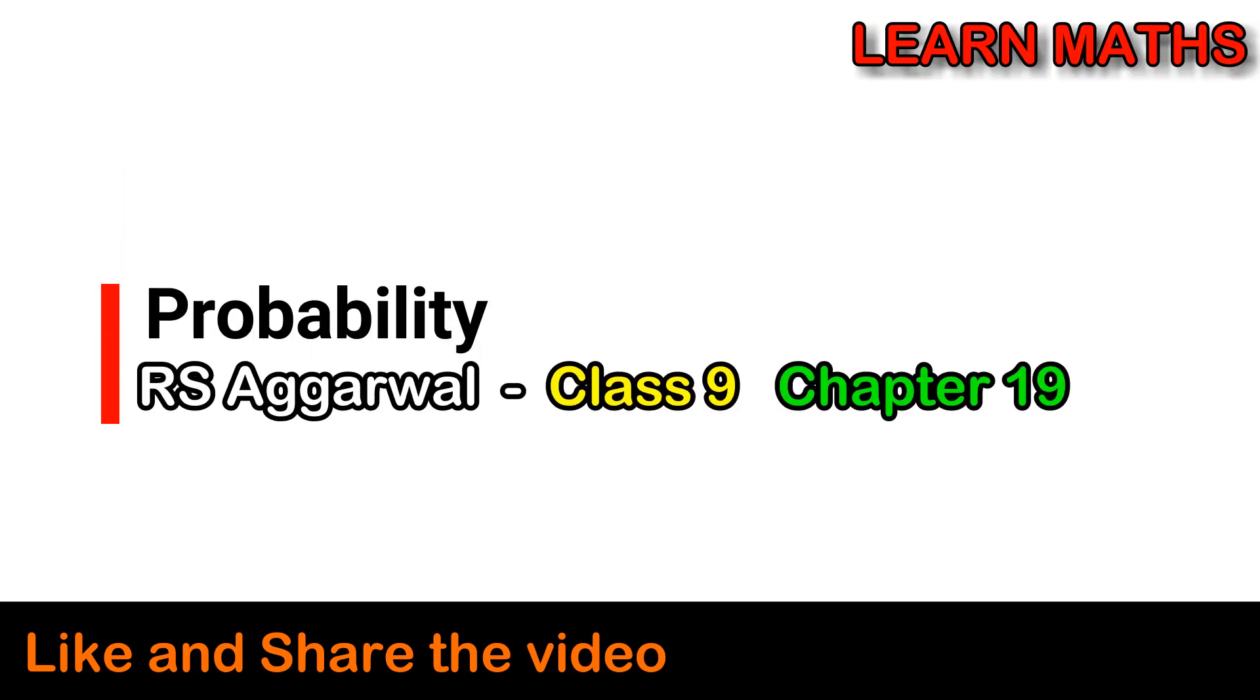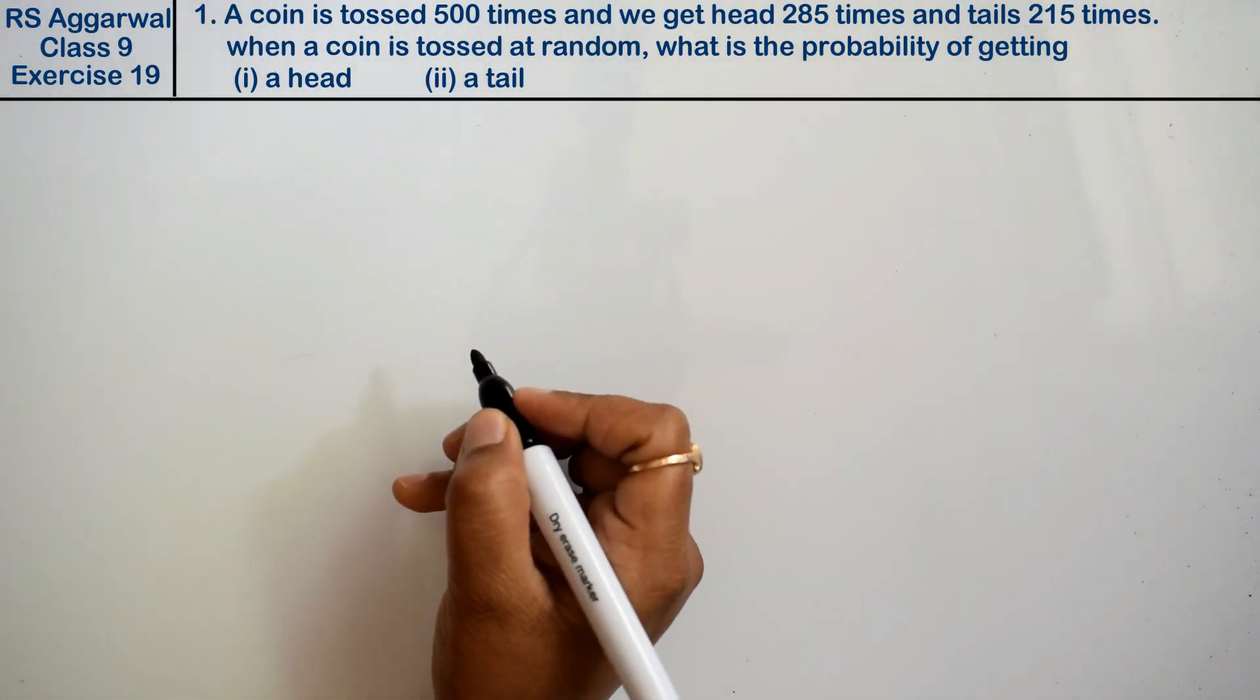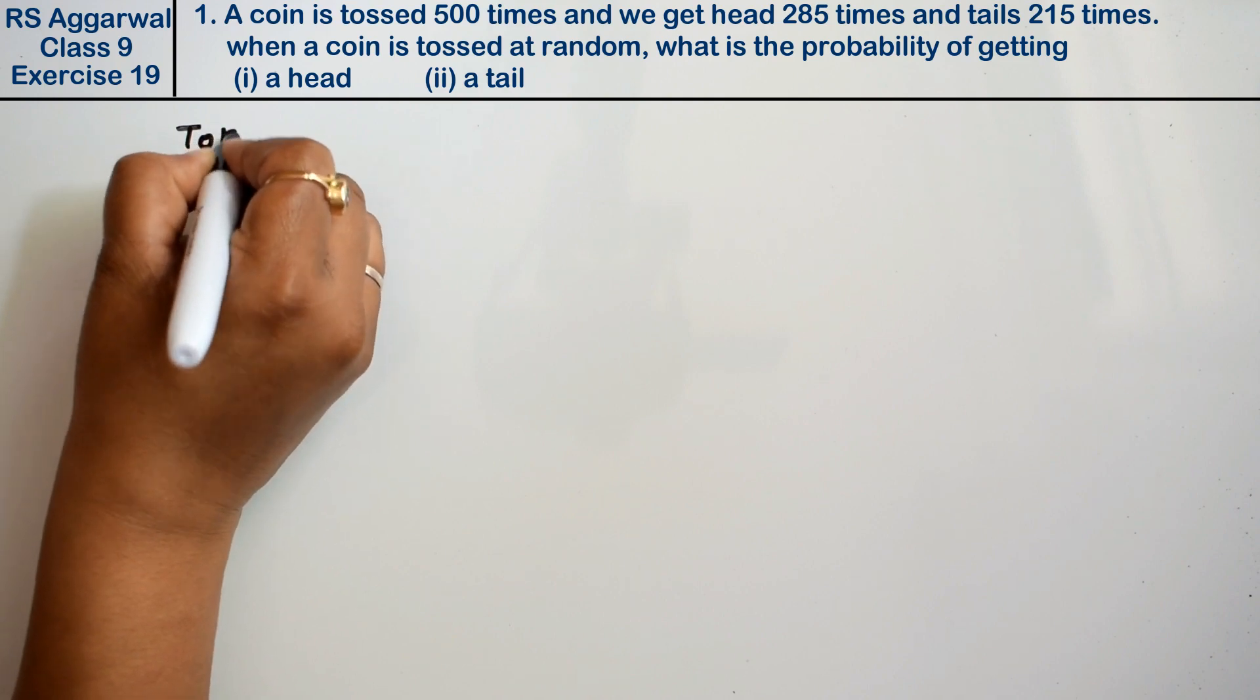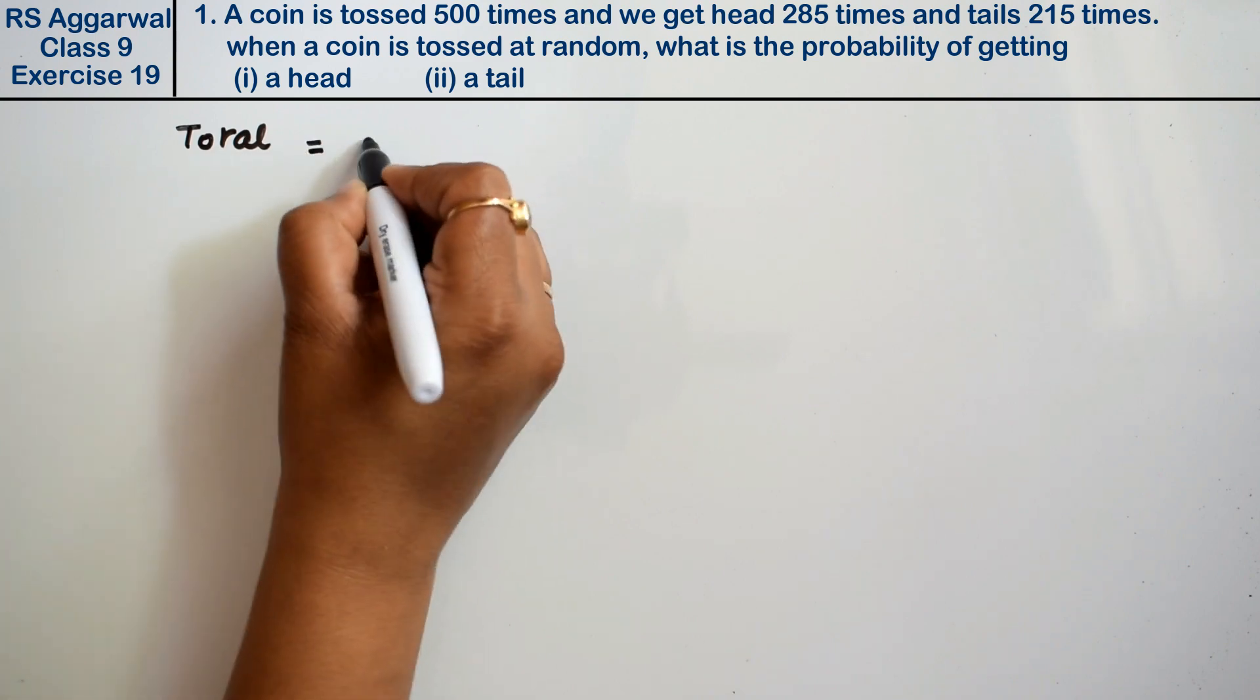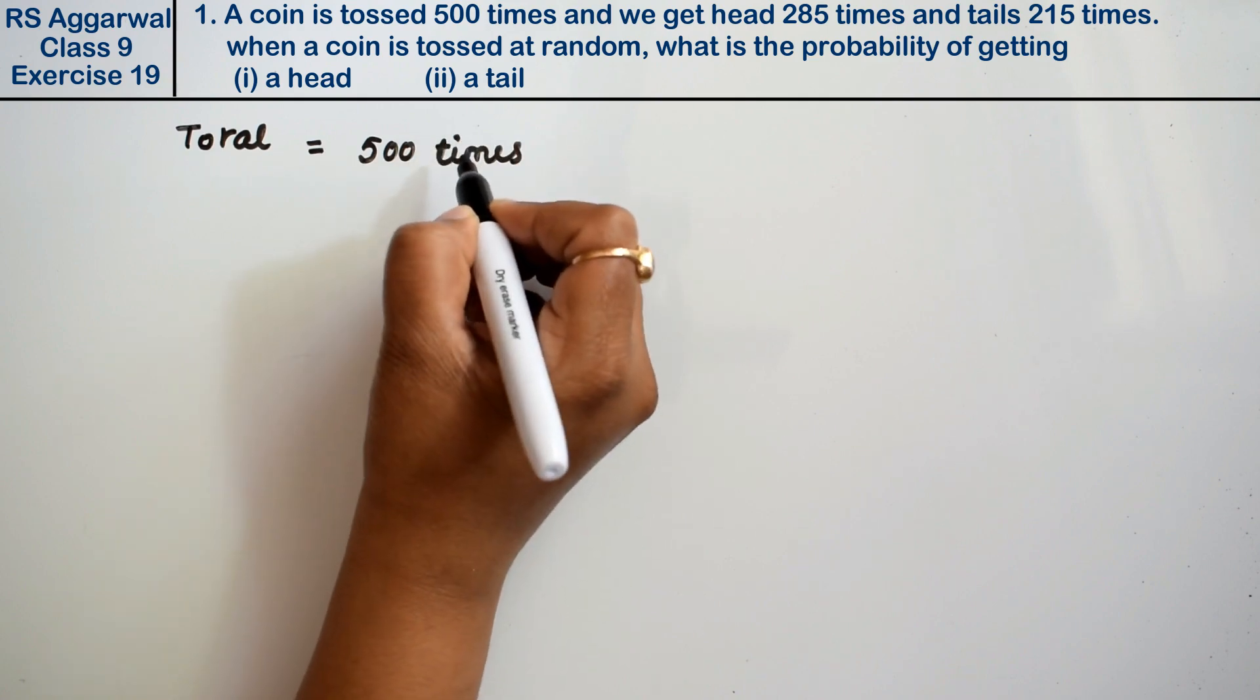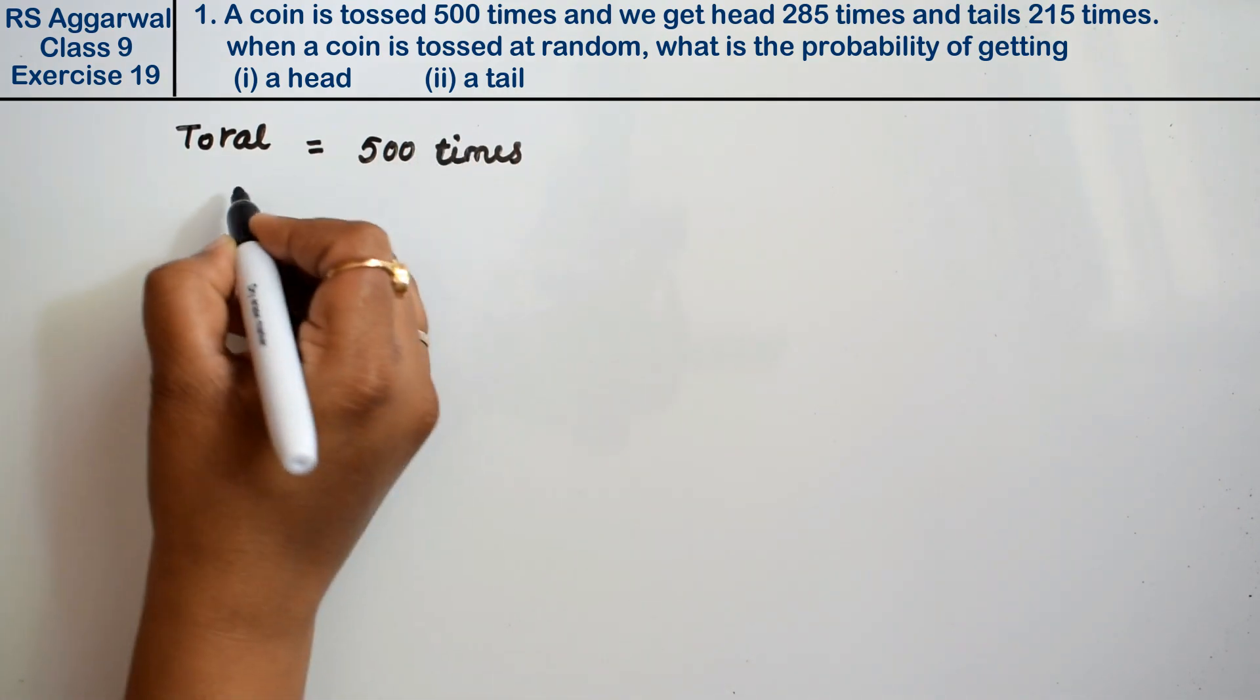Let's do question number 1 of Exercise 19, that is probability. Question number 1: A coin is tossed 500 times. The total number of times the coin was tossed is 500 times.